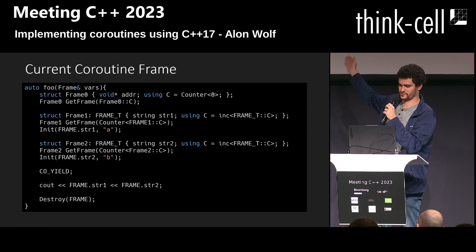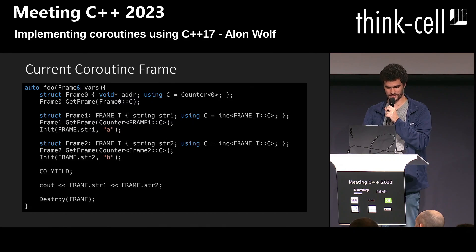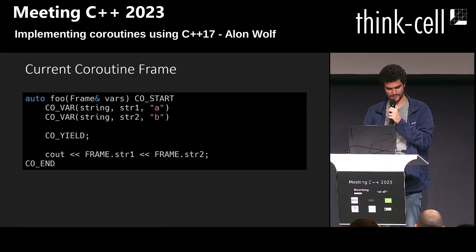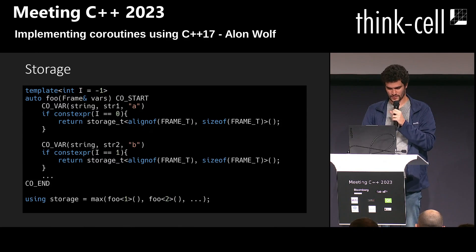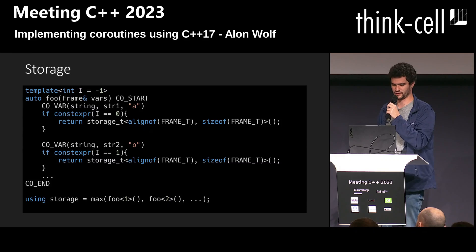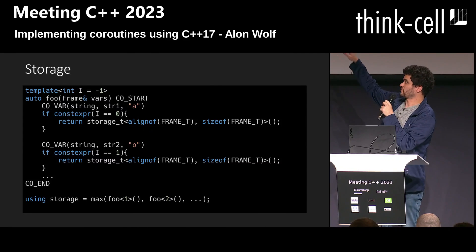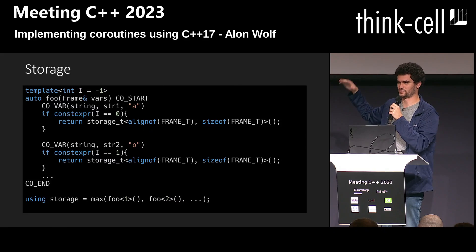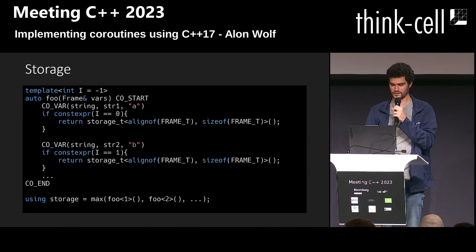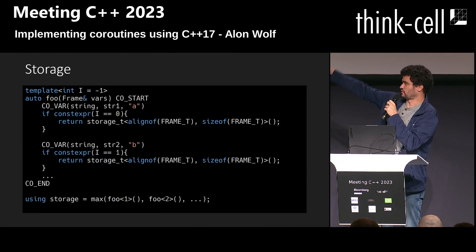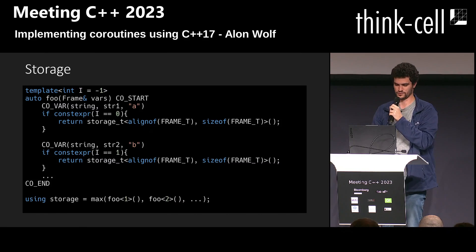Instead of declaring a variable directly, we need to declare a new coroutine frame that contains the variable as a data member, and we can wrap it in macros to make the code a little nicer. We also need a way to find out the entire space storage for the coroutine frame. The coroutine function takes an I template parameter and we can use it to pass out the storage requirements for each one of the coroutine frame types. Finally, the storage is the maximum of all the coroutine frame requirements.